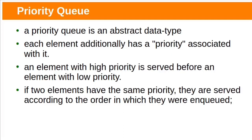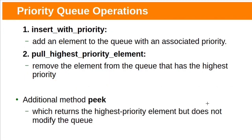In the previous class we saw linked list implementation of queue. Today let us see priority queue. Priority queue is an abstract data type similar to a regular queue or stack. In a priority queue, each element has an additional priority associated with it. High priority elements will be served before low priority elements. If two elements have the same priority, they are served according to the order in which they were enqueued.